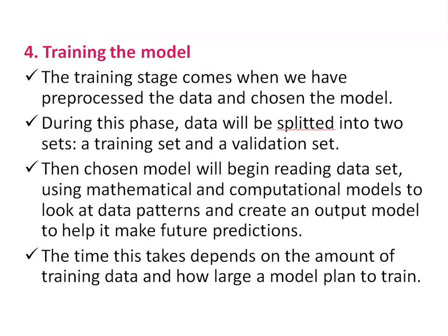Step four is training the model. The training stage comes when we pre-process the data and select the model. During this phase, data is separated into two sets: a training set and a validation set. The chosen model begins reading data sets, using mathematical and computational models to look at data patterns and create an output model to help make future predictions. The time this takes depends on the amount of training data and how large a model is planned to train.